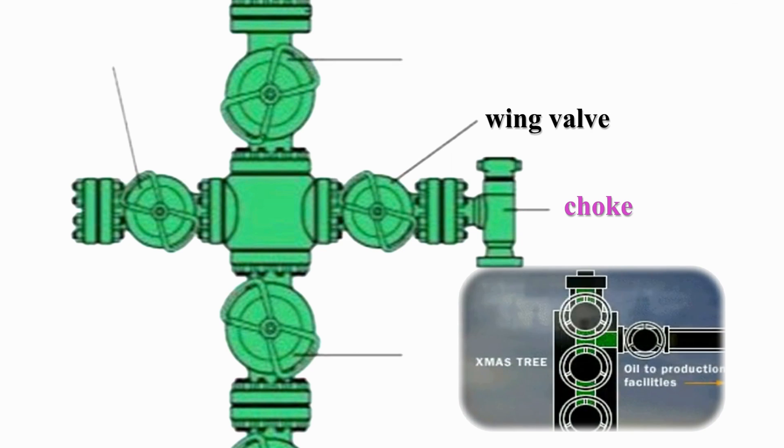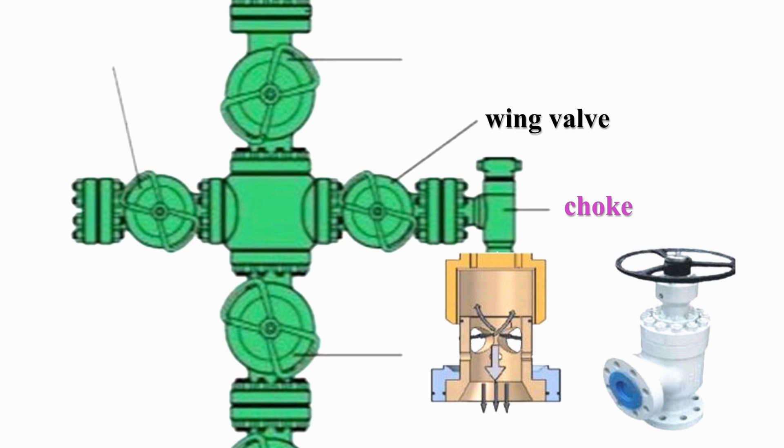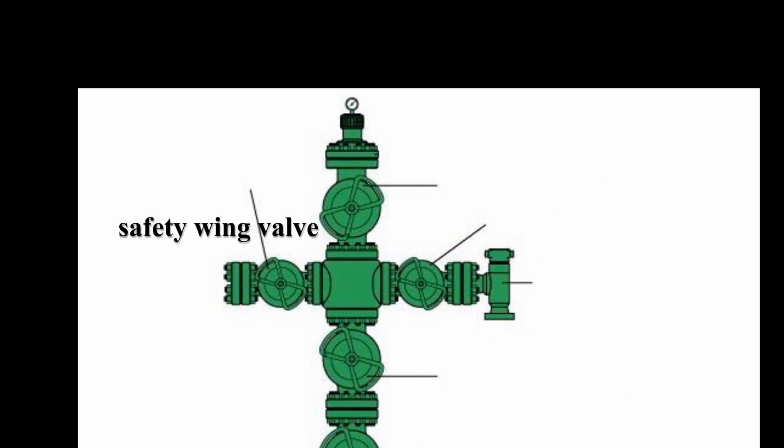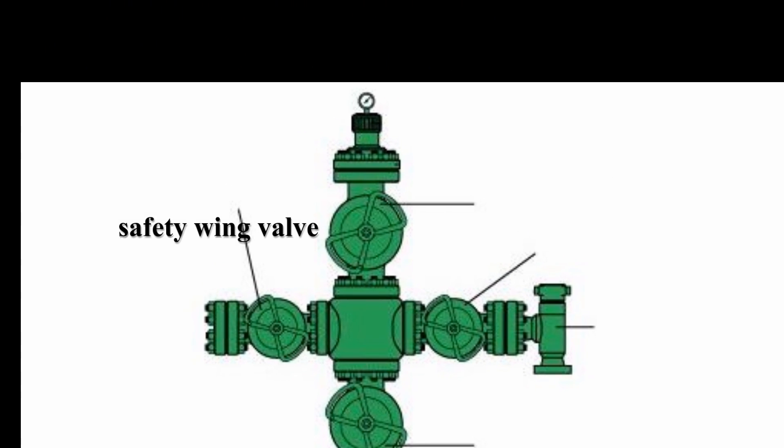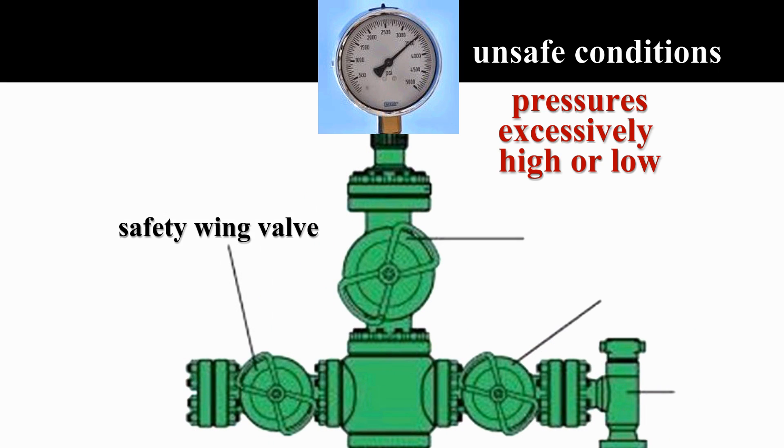The choke is an orifice that varies in size to control the well's flow rate. It also confines full well pressure to the tree, thus protecting equipment downstream. Finally, the safety valve automatically shuts in the well when unsafe conditions are recorded, such as excessively high or low downstream pressures.